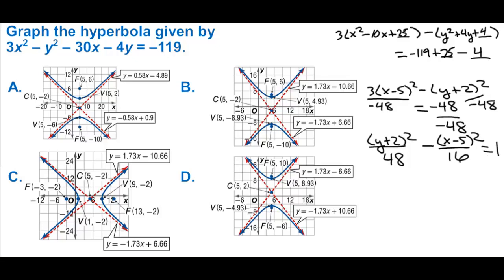The center is (5, negative 2). We can eliminate answer d, which shows positive 2. Since y is first, it's not a left-right hyperbola, eliminating c. Going up and down the square root of 48 — about 7 — matches answer B.